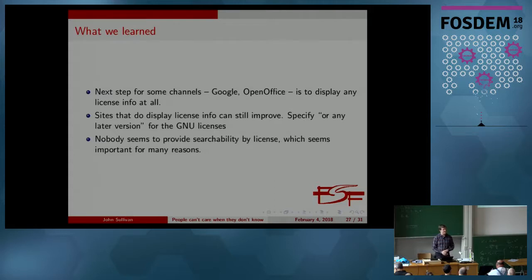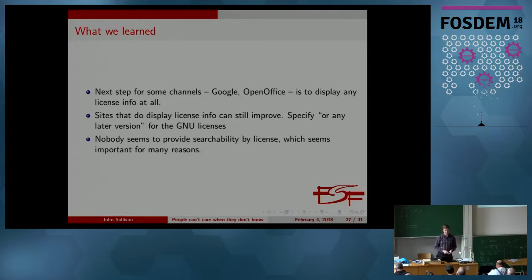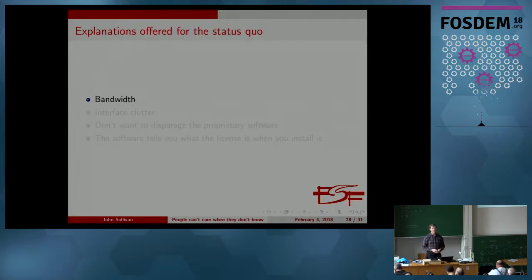We have tried to change this already. We've had conversations with some of these companies and projects, asking them to add more license information and to add, if not a full search capability, at least a place we could link to that would show only the free extensions — so that we could be sure we were not directing our supporters towards anything proprietary. We've gotten a lot of explanations — I'll be charitable and not call them excuses — but reasons why people don't have this information there already. Believe it or not: bandwidth. Every byte is sacred. And interface clutter — though that's not all that persuasive given the three-screenshot Google Play interface, which I think has room if they want to put it there.